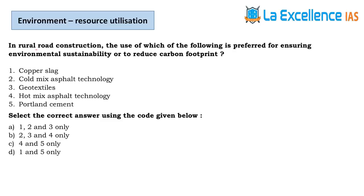The next question is about rural road construction for environmental sustainability and reducing carbon footprint. Using cement involves lots of CO2 in production, so eliminate option 5. Then either cold mix or hot mix technology is used — not both. We use cold mix technology in rural road construction. When statement 2 (cold mix) is correct, that option is the answer — A.